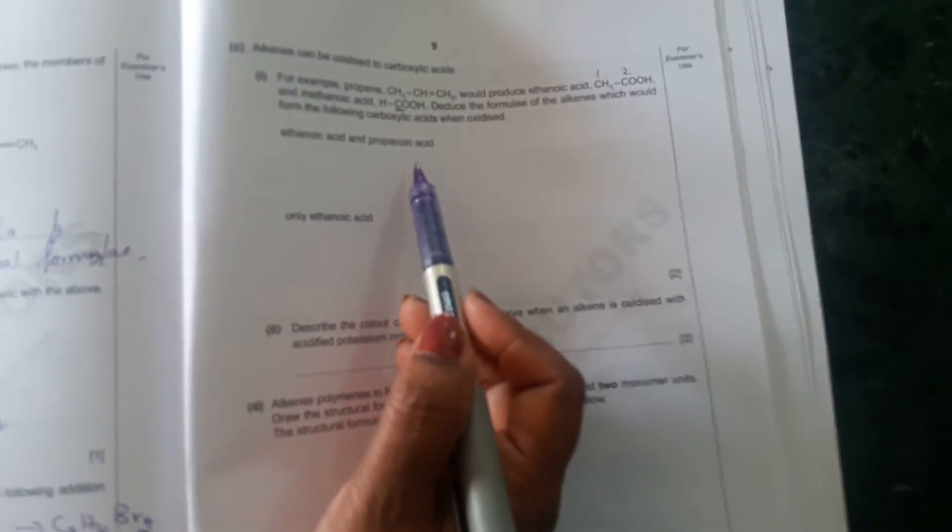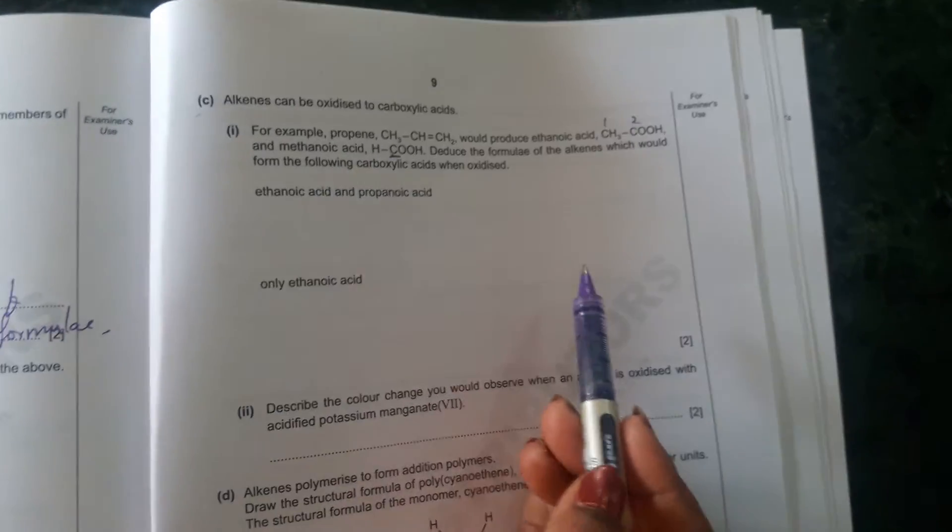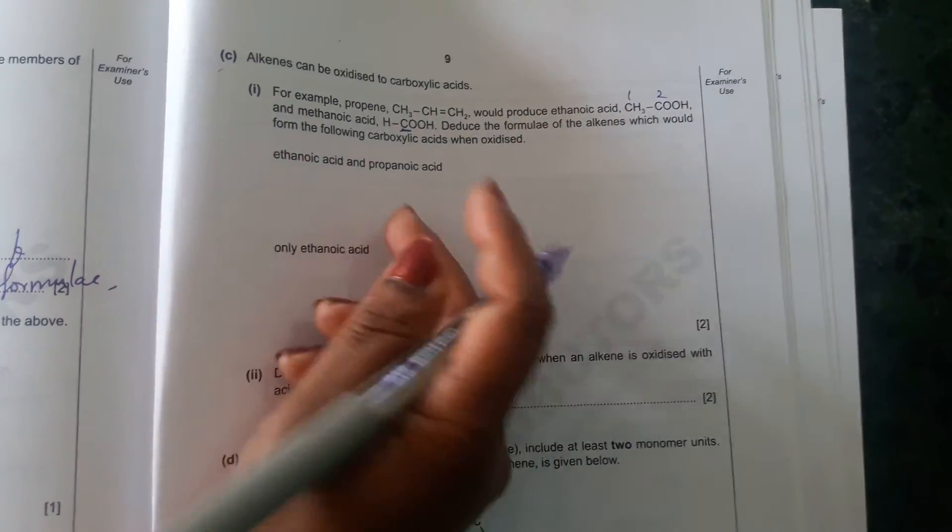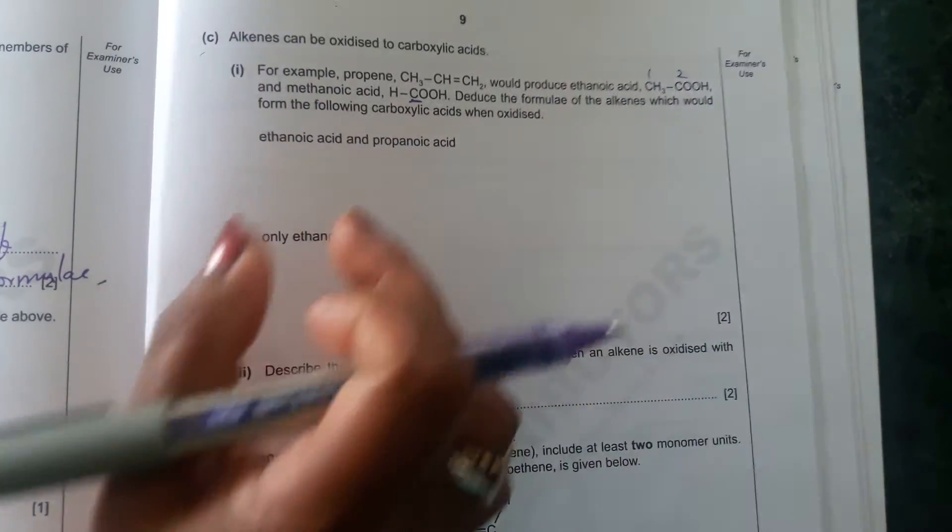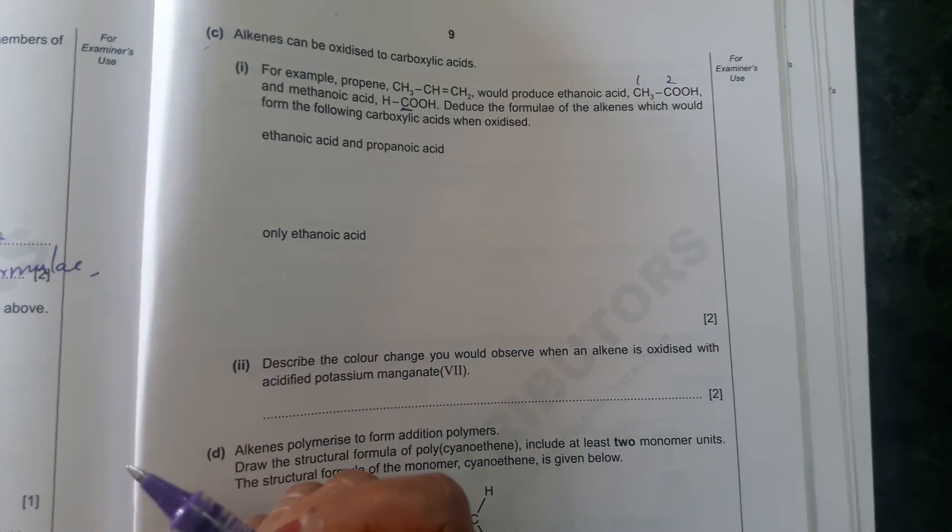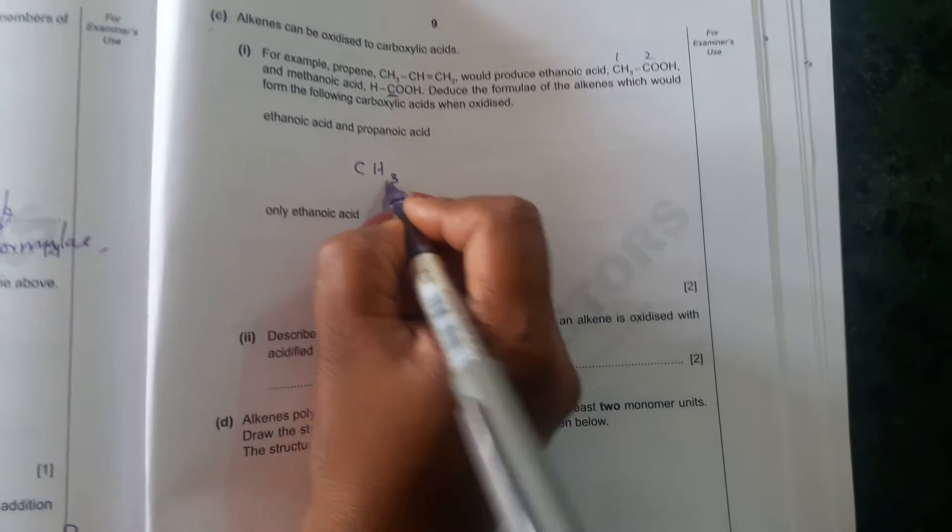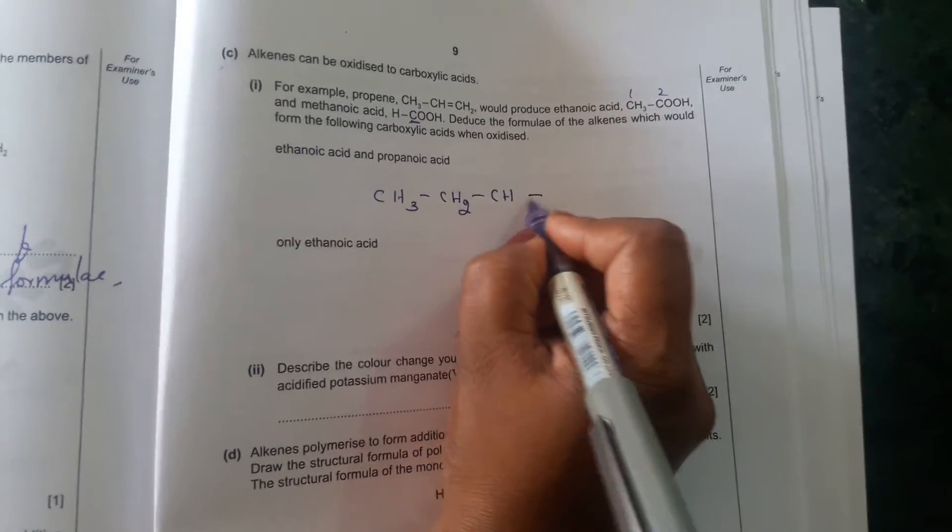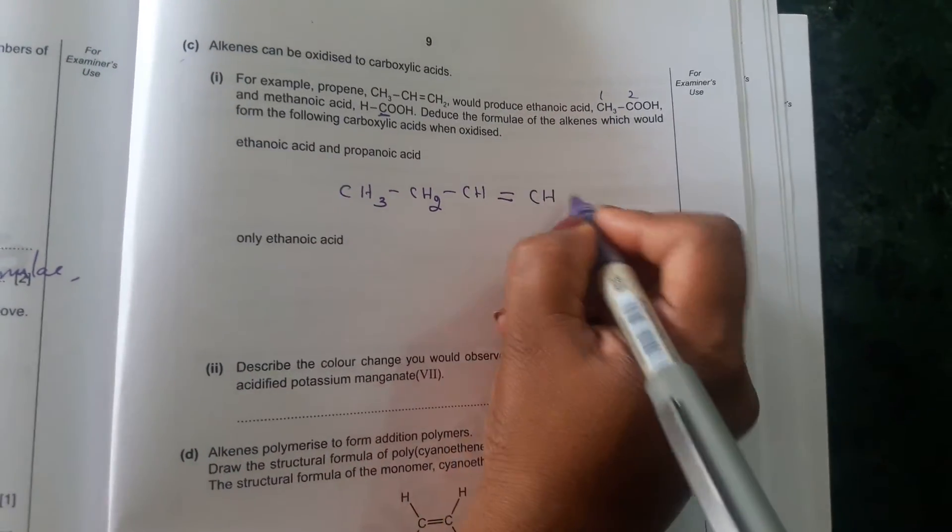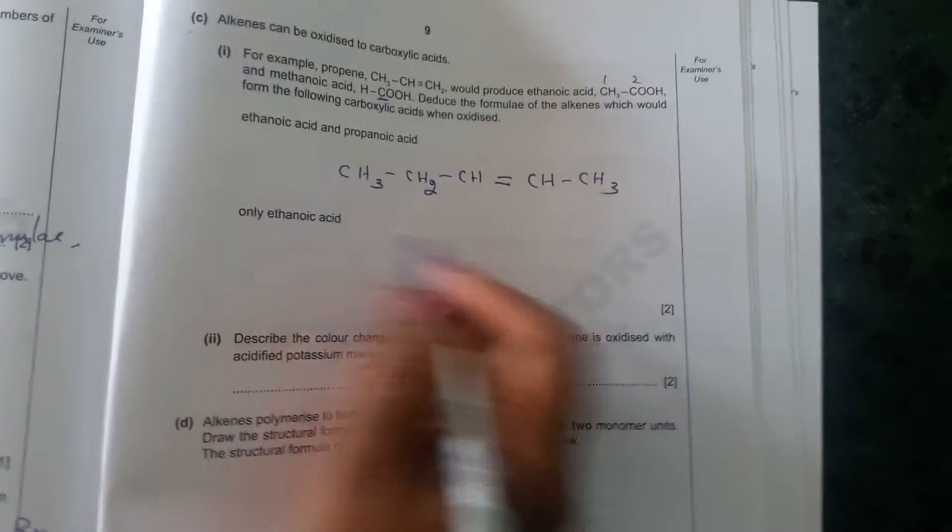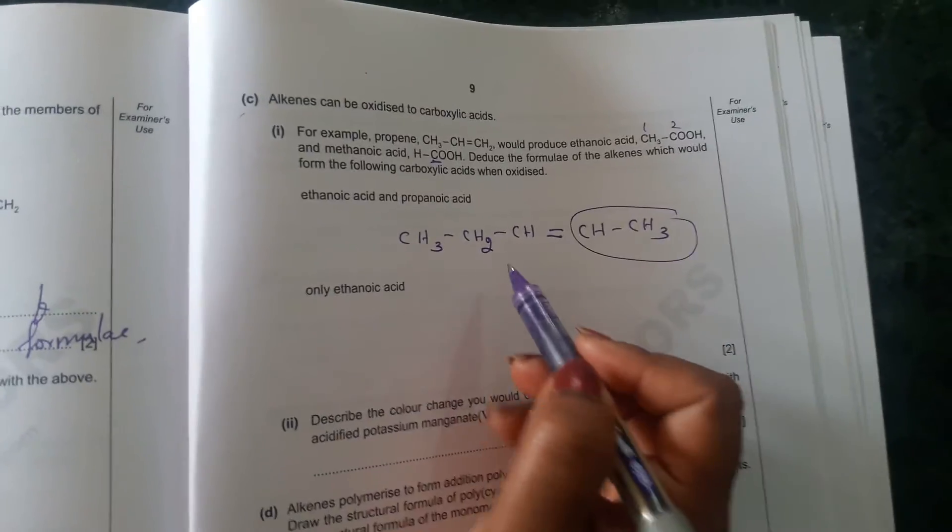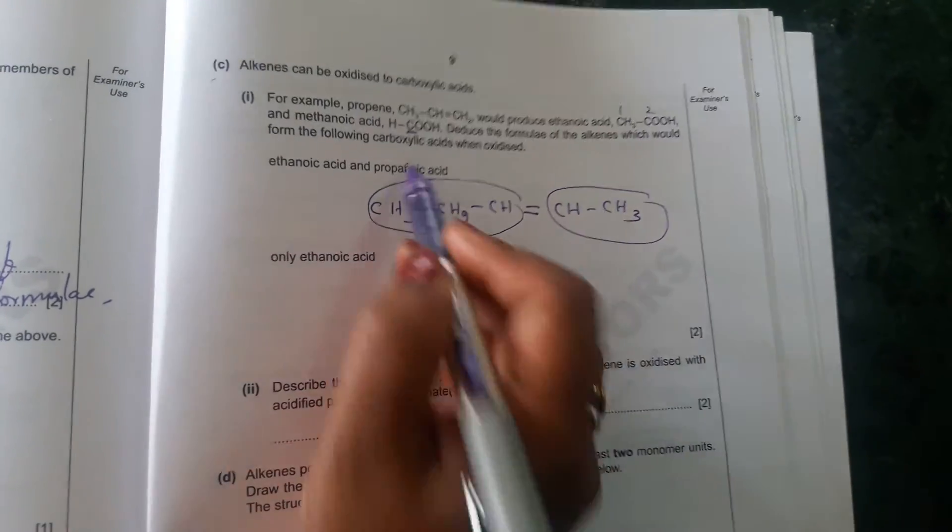So here, the question is ethanoic acid and propanoic acid. Which is alkene which produces these two acids. So in that case, you need to know this contains at least five carbon atoms. So that five carbon atoms, how will you show? CH3, CH2, CH double bond CH, CH3. In this case, when it become acid, this becomes ethanoic acid and this becomes propanoic acid.